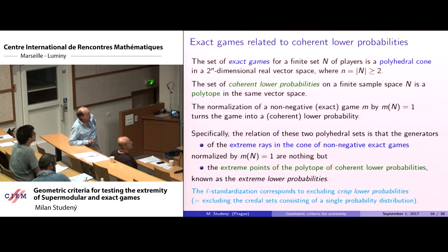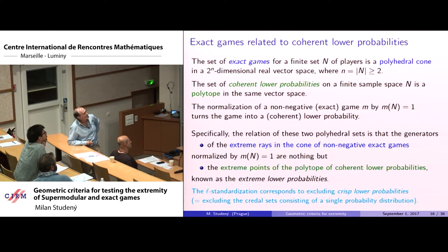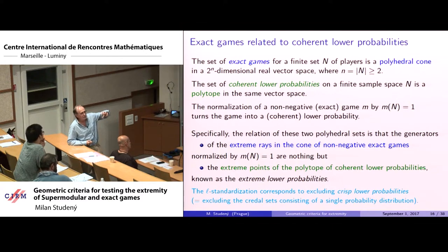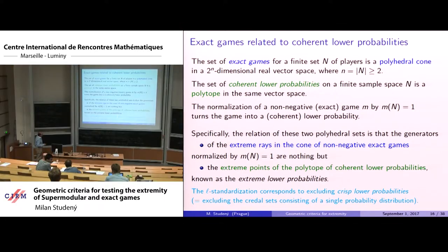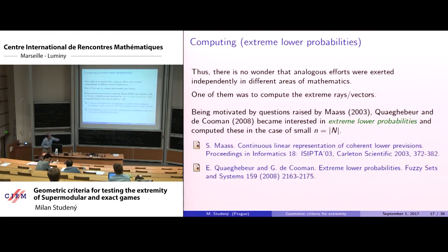The correspondence is: players in game theory correspond to elements of the finite sample space; the credal set of probabilities is described by the lower probability as lower bounds, and these are set functions — the same concept as in game theory up to a constant. Because the same mathematics appears in both areas independently under different terminology, there was analogous effort to compute extreme rays in game theory and extreme vectors in imprecise probabilities.